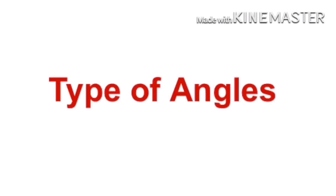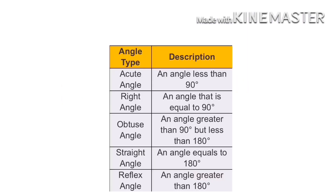There are different types of angles based on their measurements. They are: acute angle, right angle, obtuse angle, straight angle, reflex angle, and complete angle. Now let us learn about these angles in detail.